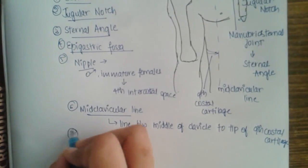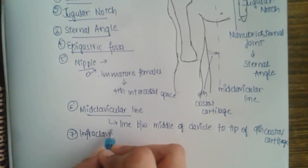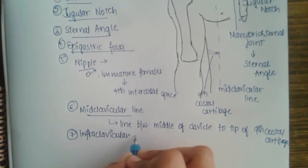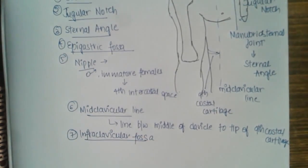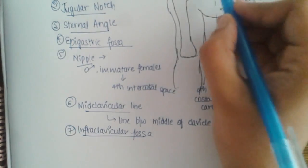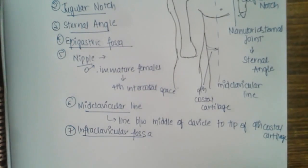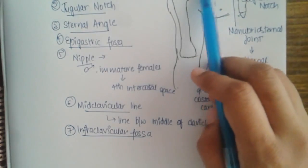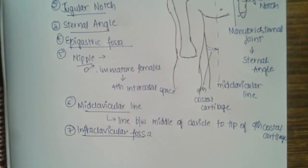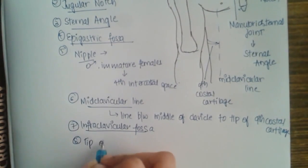The seventh landmark is the infraclavicular fossa. A fossa is a type of cavity or depression. The infraclavicular fossa is a triangular depression present just below the clavicle, at the junction of the lateral third and middle third of the clavicle.